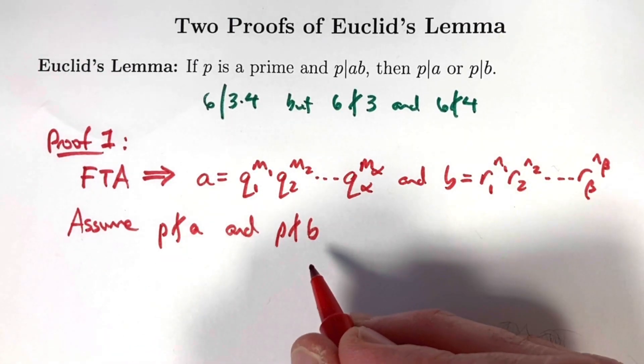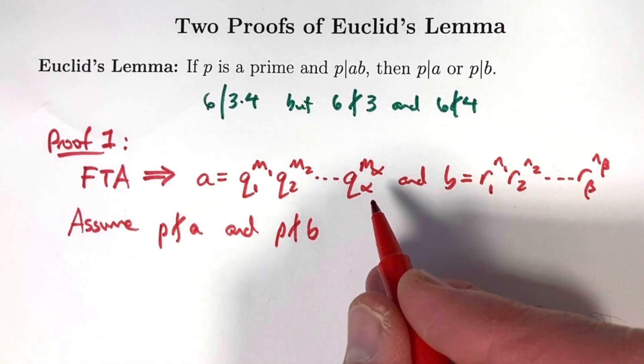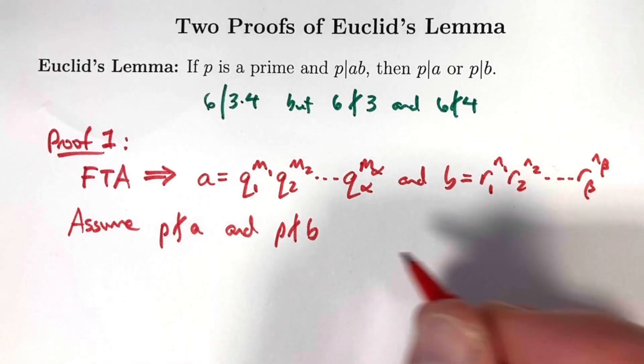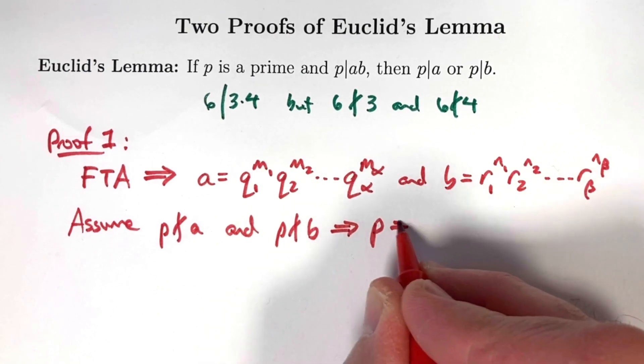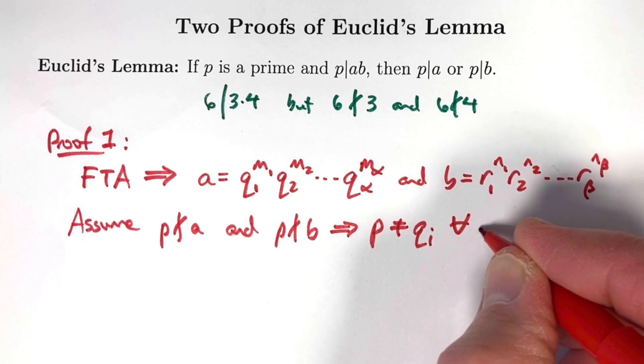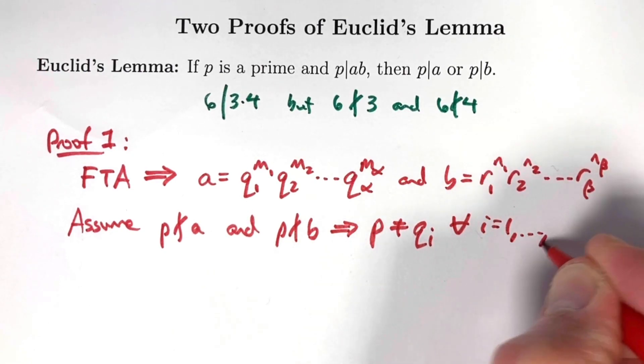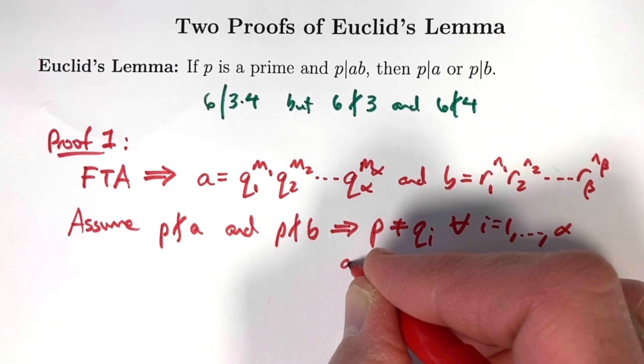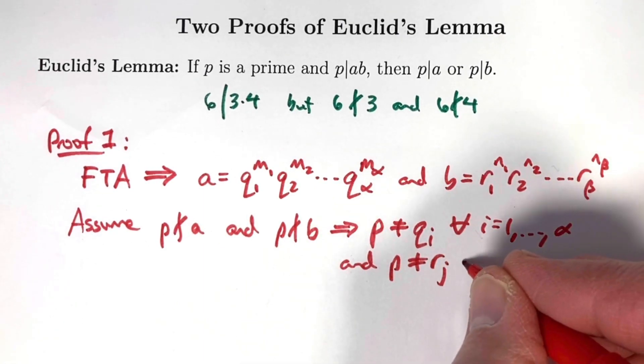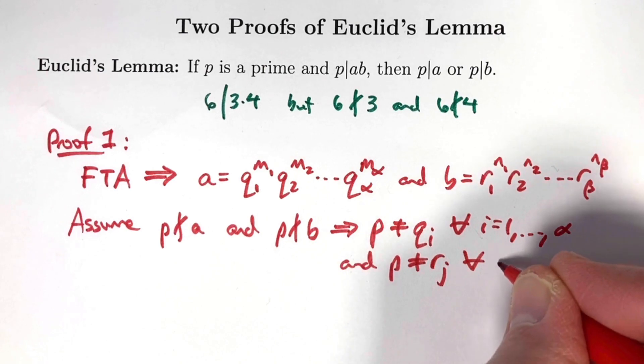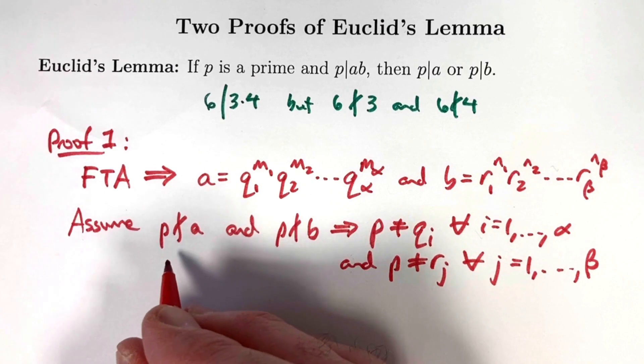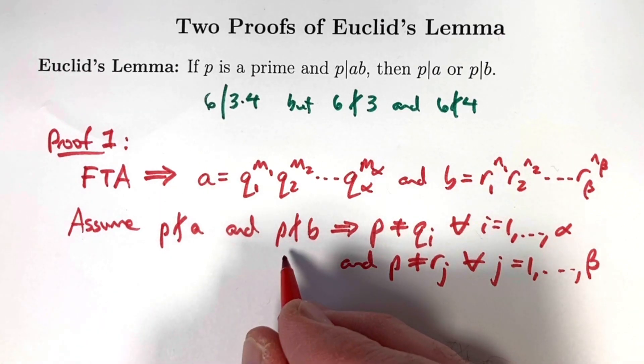Since p does not divide either a or b, p can't possibly be one of these prime factors in either case. P cannot be one of the qs and p cannot be one of the rs. This implies p does not equal q_i for any of the i subscripts from 1 to alpha, and p does not equal r_j for any j goes from 1 to beta.